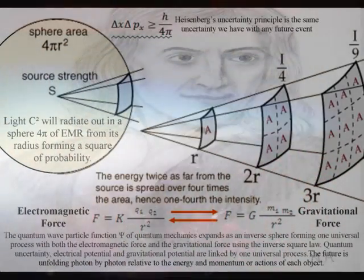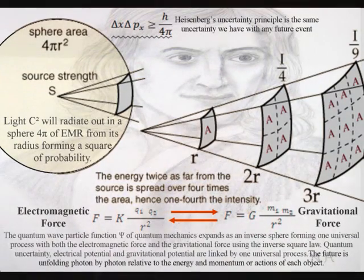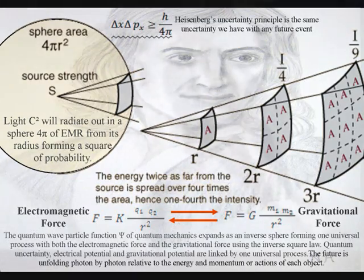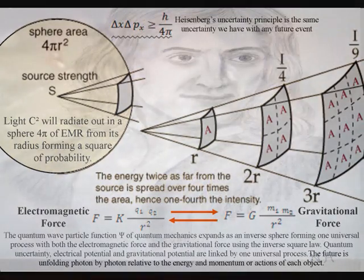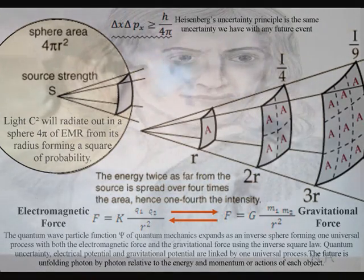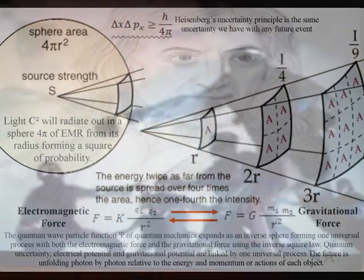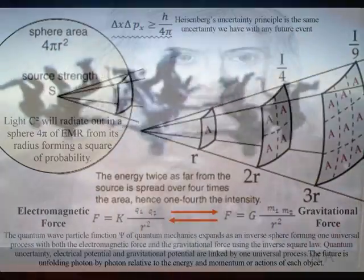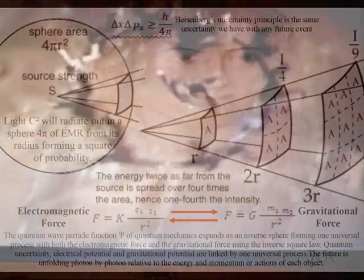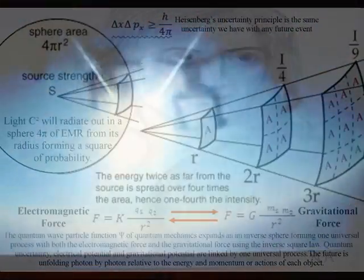This can be seen mathematically, with both the electromagnetic force and the gravitational force sharing the inverse square law. The light photon of quantum mechanics is the carrier of the electromagnetic force, forming one universal process of energy exchange. As in Newton's third law of motion — to every action there is an equal and opposite reaction — gravity is the opposite reaction to the spontaneous emission and absorption of photon energy.